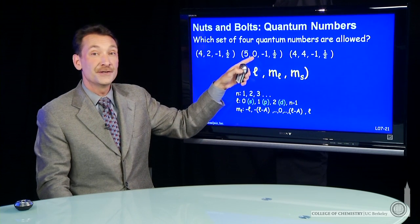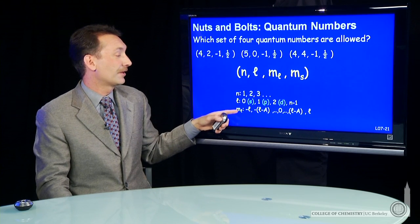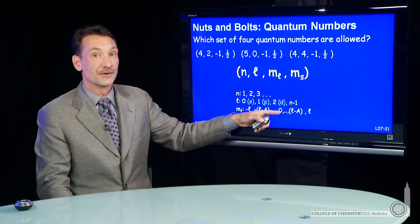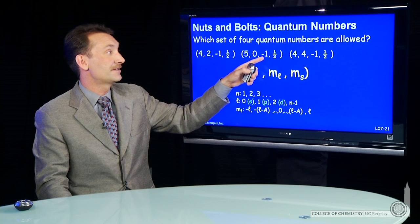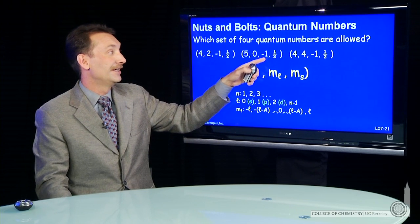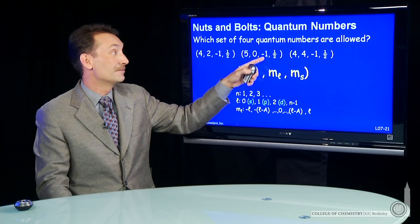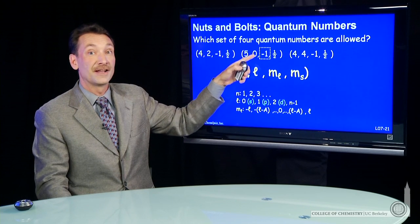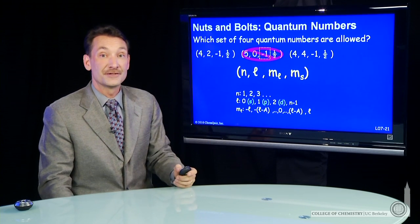Now when l is 0, all m sub l can be is 0. So this quantum number here is out of line. m sub l can only be 0 if l is 0. So that's not an allowed set of quantum numbers.